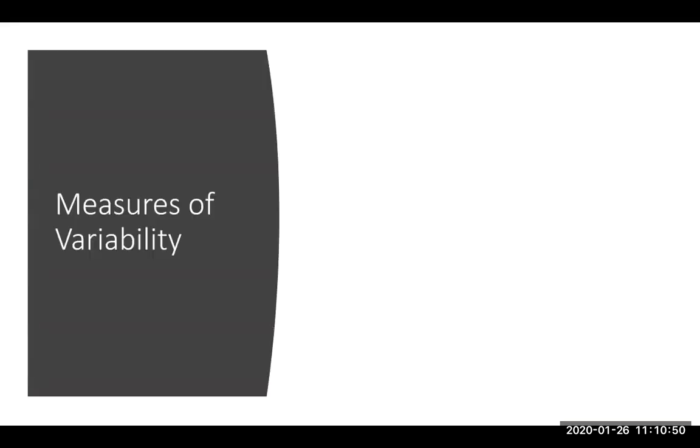So we're going to talk about three measures of variability, just like we had three measures of central tendency. We're going to do this lecture a little differently. I'm first going to give you an overview of all three, and then in a separate lecture, I'm going to describe mathematically how they work. It kind of just works better that way.